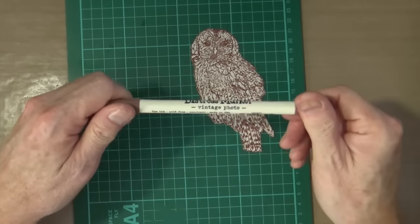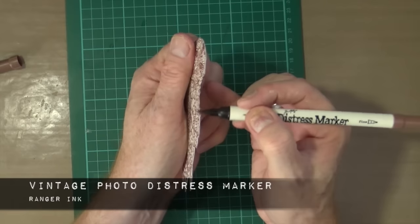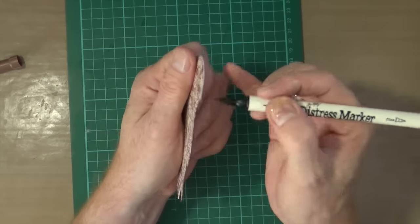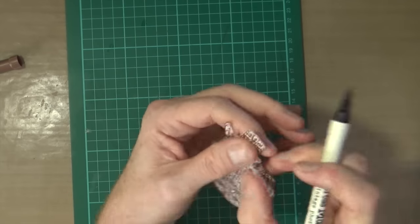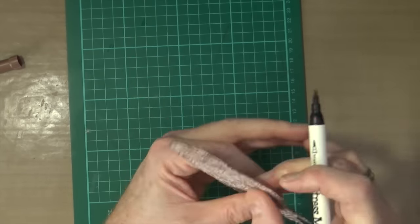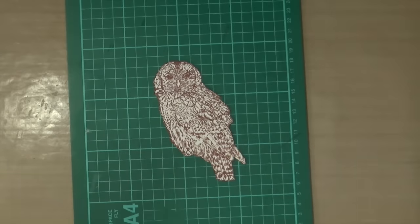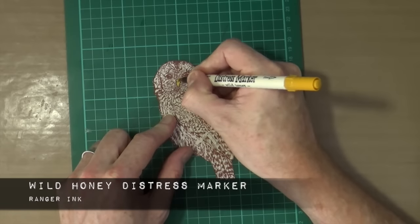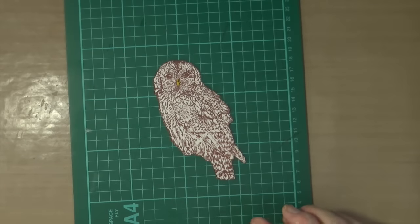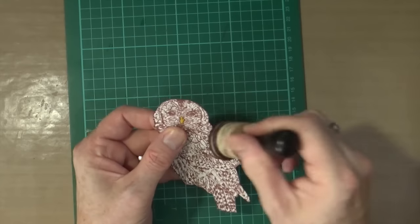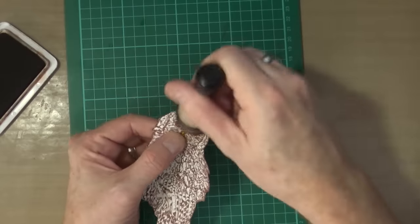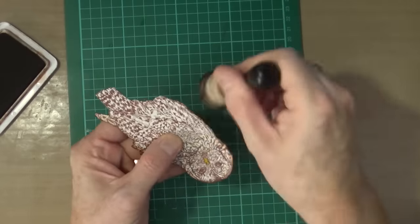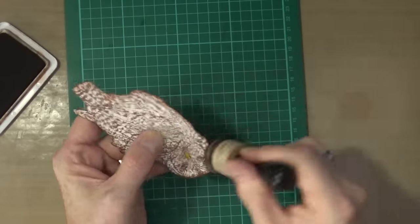Now I'm going to grab my vintage photo distress marker and using the brush tip end, I'm just going to go around the edge of my cutout just to remove those raw white edges. To give the owl a little bit more detail, I'm bringing out my wild honey distress marker and again using the brush tip, just coloring in the owl's beak. Then once again using the sepia ink and the blending foam, I'm just going to go around the edges of the owl just to add that same kind of blended look as the other elements I've already done.